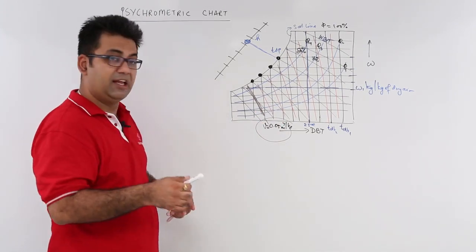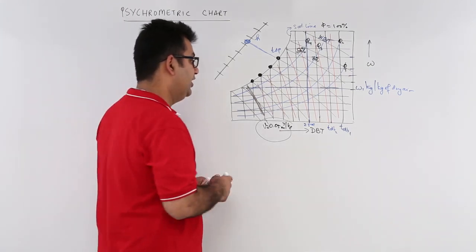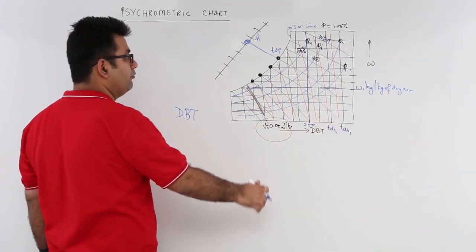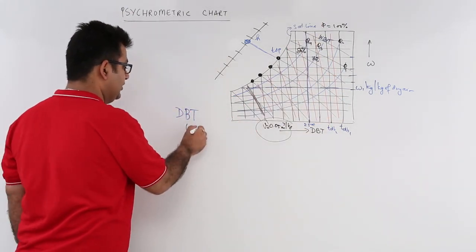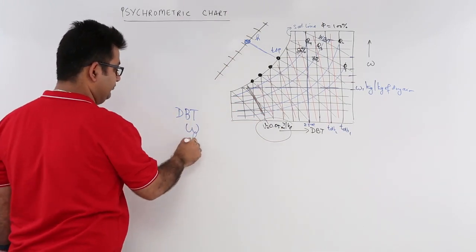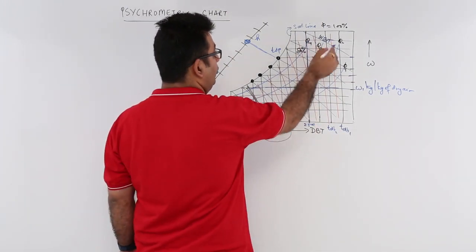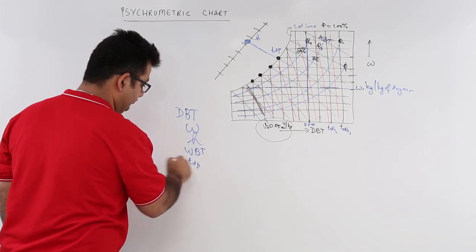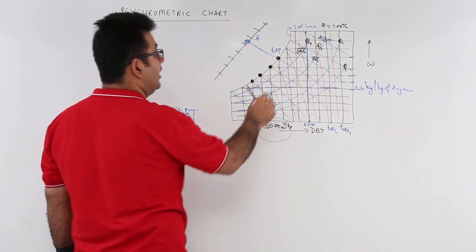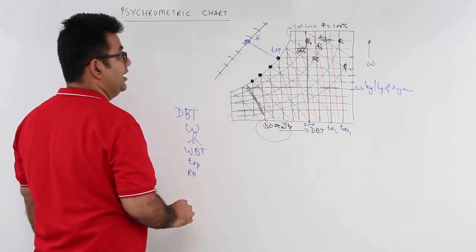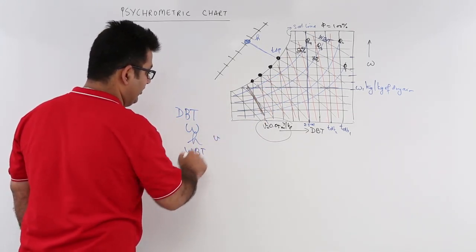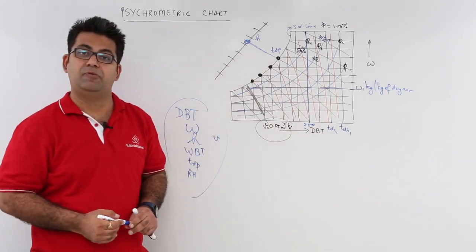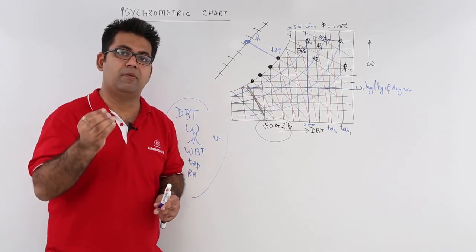So in a nutshell, your psychrometric chart gives you: DBT on the horizontal axis, omega (specific humidity) on the vertical axis, enthalpy on the outer axis, wet bulb temperature, dew point temperature, relative humidity, and specific volume. All psychrometric terms can be found through the psychrometric chart — you do not need to remember the psychrometric relations we derived earlier.